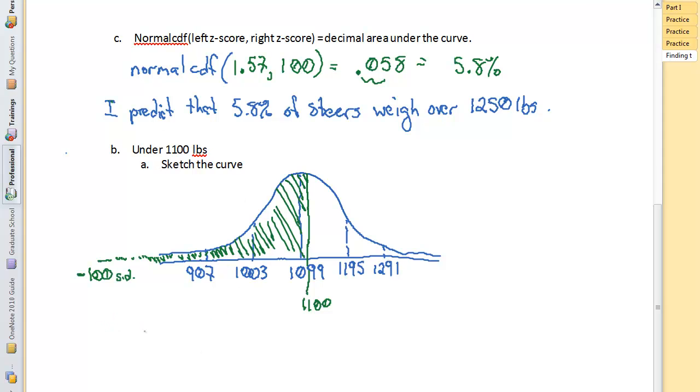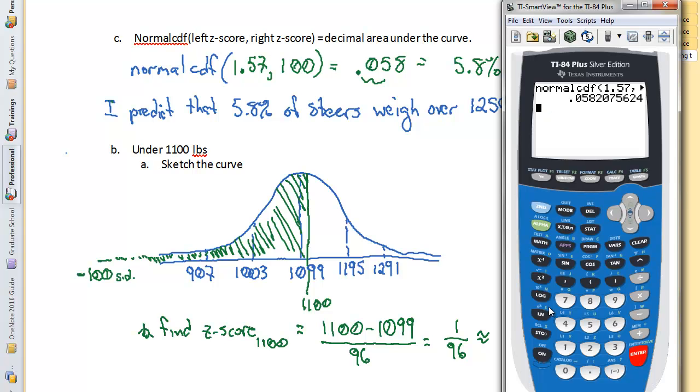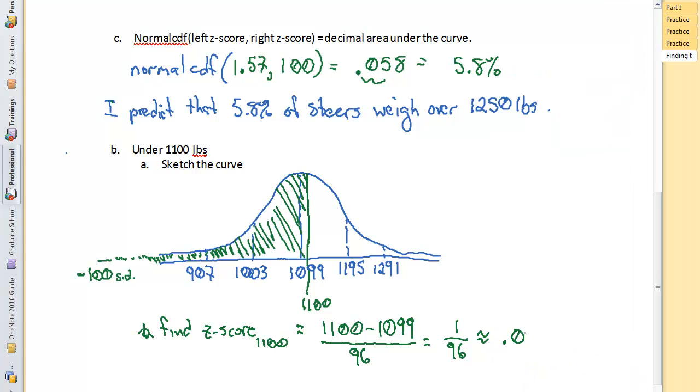Now I want to find my z-score of 1100, and that's going to be 1100 minus 1099, all over 96, which gives you 1 over 96, which is decimally approximately 0.01.